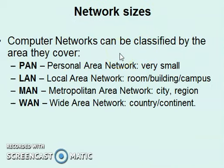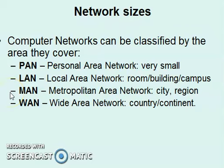Networks can be classified by the area they cover — that is, the size of the network. There are four types: PAN (personal area network), which is very small; LAN (local area network), which covers a room, building, or campus; MAN (metropolitan area network), which covers a city or region; and WAN (wide area network), which covers a country or continent.